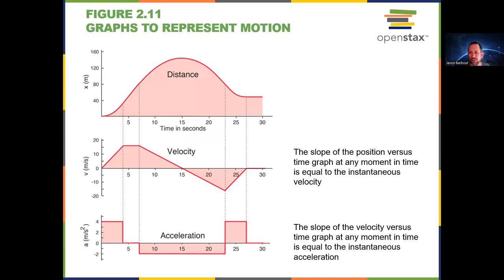Here are some more graphs we can look at. The slope of the position versus time graph at any moment is equal to the instantaneous velocity. We could look at some points here with a small positive velocity — this is a tangent line at about two seconds, showing a small positive velocity.